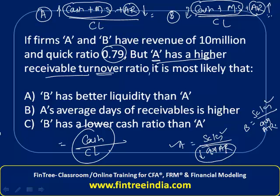Since the cash component of B is going to be relatively lower, the correct answer in this case is option C: B has a lower cash ratio than A.